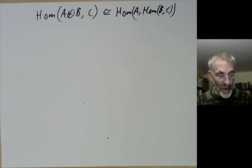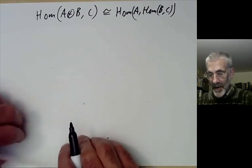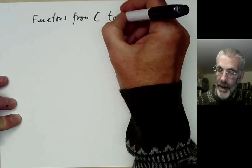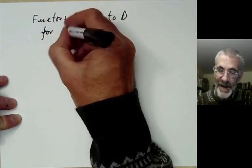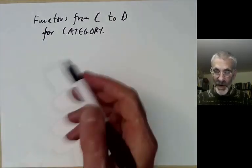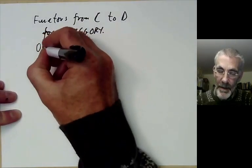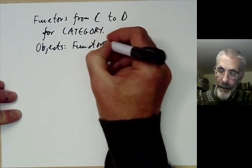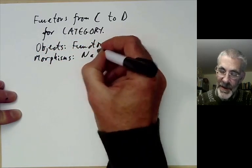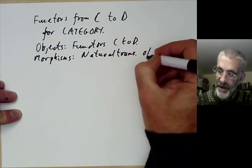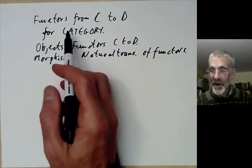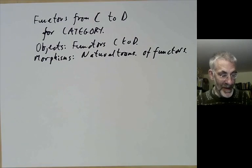We can also make the set of functors between two categories into a category itself. The functors from C to D form a category where the objects are functors from C to D and the morphisms are natural transformations of functors. Functors are not only morphisms but also objects of a category. Two functors are naturally isomorphic if and only if they're isomorphic in this category — that's just a trivial rephrasing of definitions.